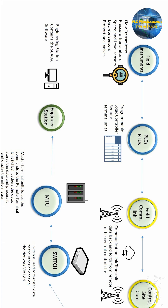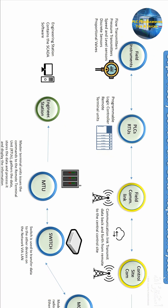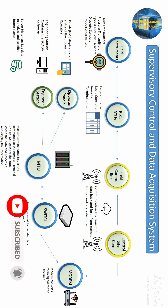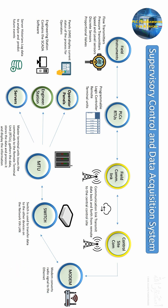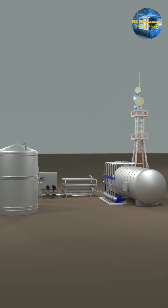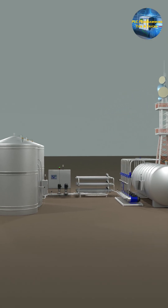If any changes in the process are required, this can be done using the engineering station. The master control unit displays the data of the current process on operator display screens, and also sends data to the server historian. These data historians continuously log the data and keep it safe, which is essential to check the performance of field devices and predict future problems.